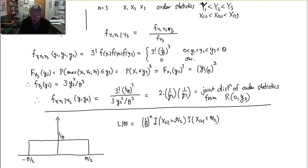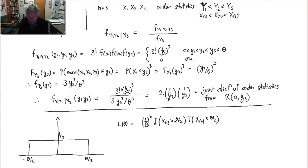Computing the ratio of joint to marginal, miraculously theta cancels out — there's a 1/θ³ in the joint and a 1/θ³ in the marginal. The resulting function does not depend on theta. You can write it as 2 times (1/y3) times (1/y3), which is similar in form to the order statistic joint density but with n=2 and the distribution being uniform on 0 to y3 instead of 0 to theta.